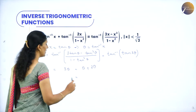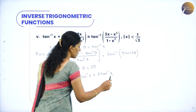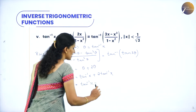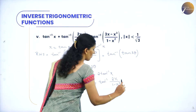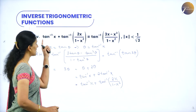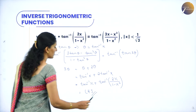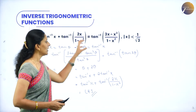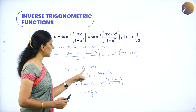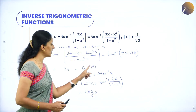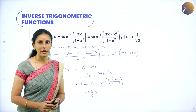So theta is tan inverse x, and 2 theta becomes 2 tan inverse x. From the formula for 2 tan inverse x, we can write it as tan inverse(2x/(1 - x²)). So the expression equals tan inverse x plus tan inverse(2x/(1 - x²)), which is exactly the LHS. Hence proved.